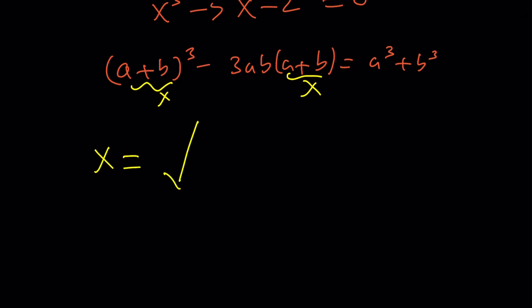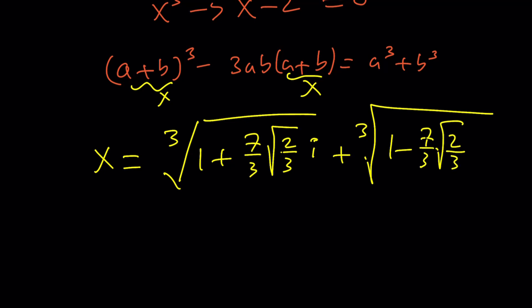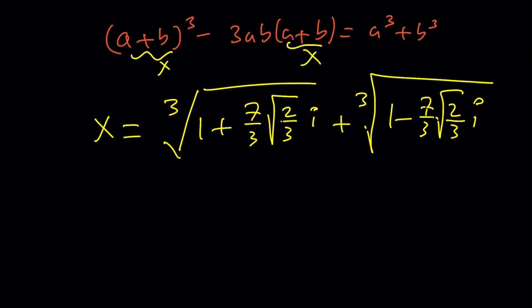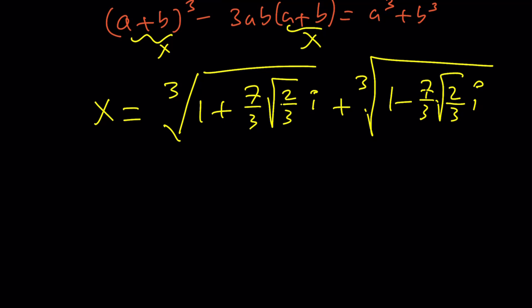After you do all of that, the x value you find is going to be cube root of 1 plus 7 over 3 times the square root of 2 over 3i plus the cube root of 1 minus 7 over 3 times the square root of 2 over 3i. Two complex numbers. The cube root of two complex numbers being added should be a real number. It's going to be interesting to find out what that number looks like.